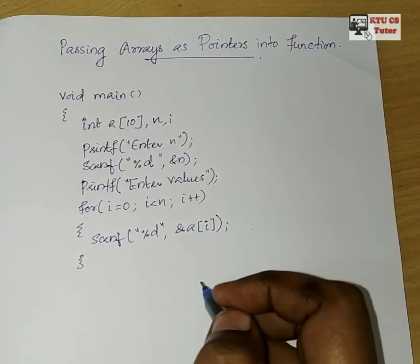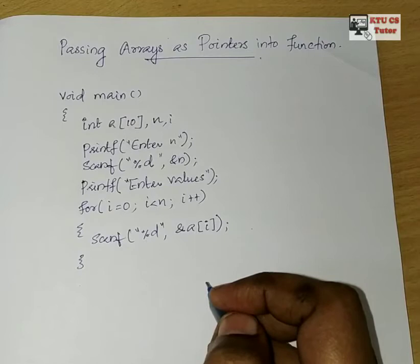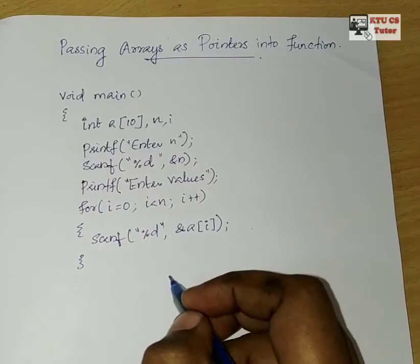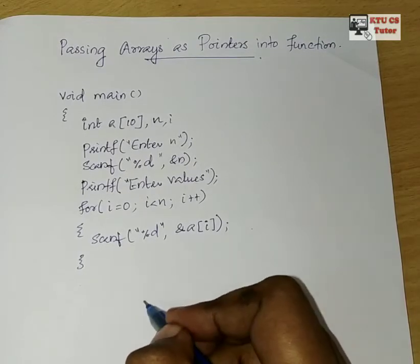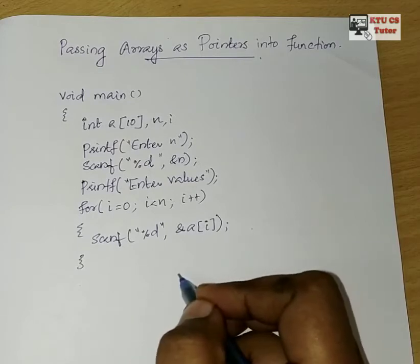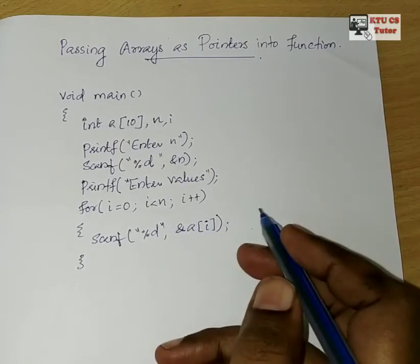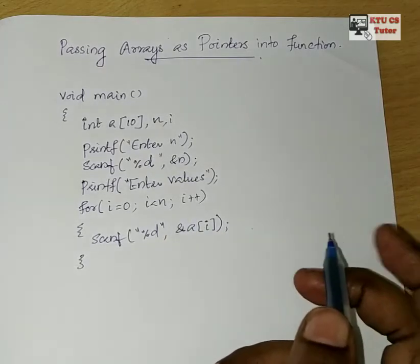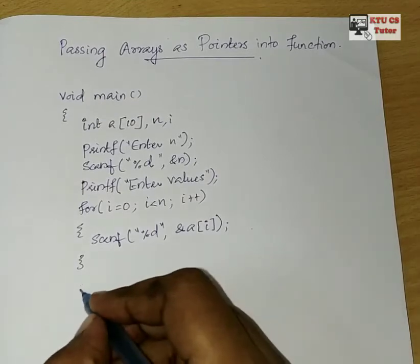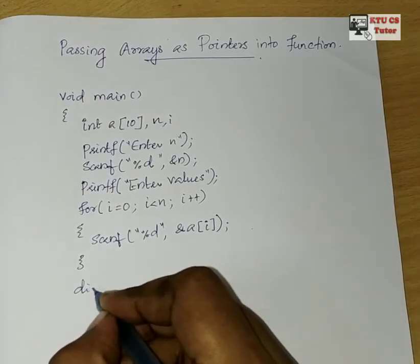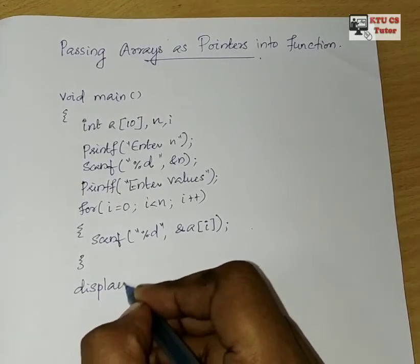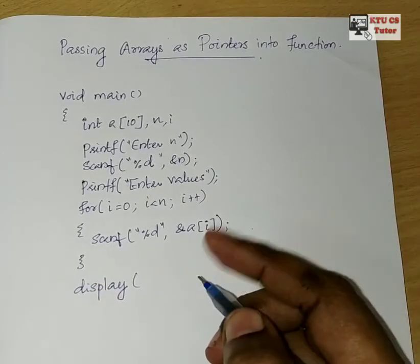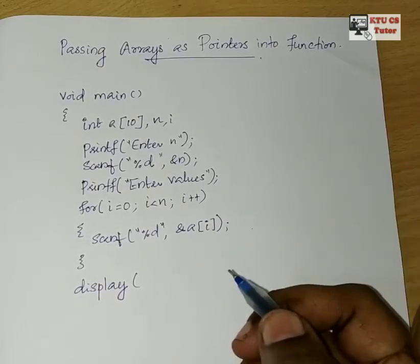So now I am going to call the display function. When I go to the display function, I am going to pass this array, then print it. So I am calling the display function and passing the array.